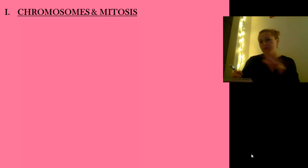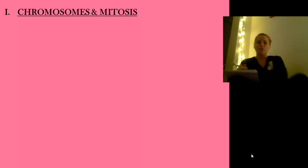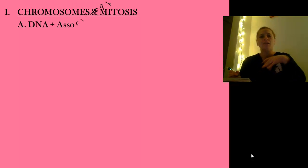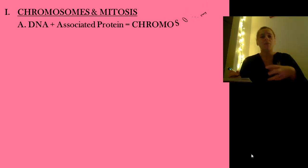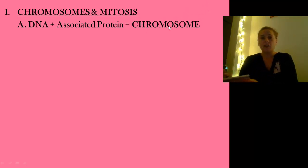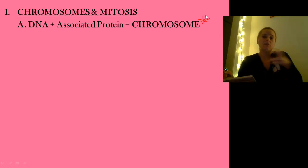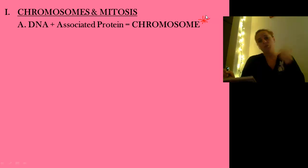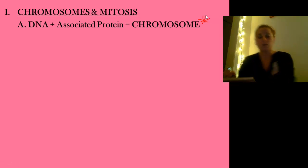We need to talk about what chromosomes are. Chromosomes are pretty important and they are a combination of DNA with associated protein. Our big definition of a chromosome is that it's not just the DNA piece — it's the proteins that wrap around it, because this allows the DNA to organize itself much more efficiently.